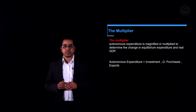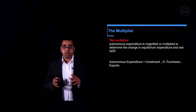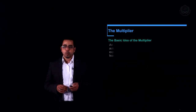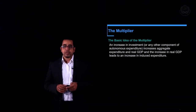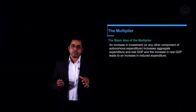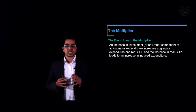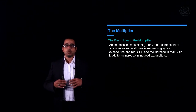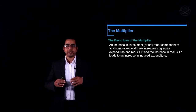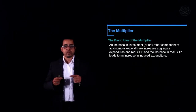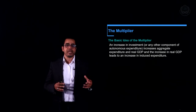An increase in investment by one will cause more than one increase in GDP. Why is that? Well, the basic idea is that the increase in investment, government purchases, or exports will actually encourage a further increase in aggregate expenditure, which will in turn increase the real GDP again.